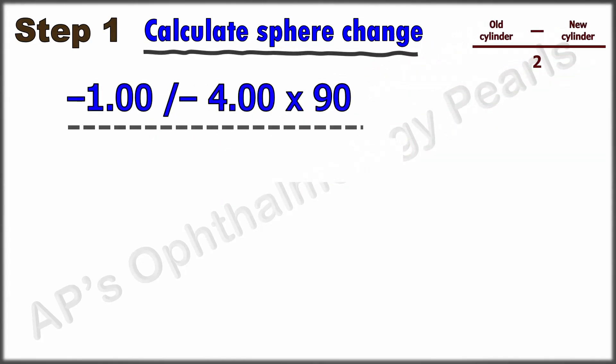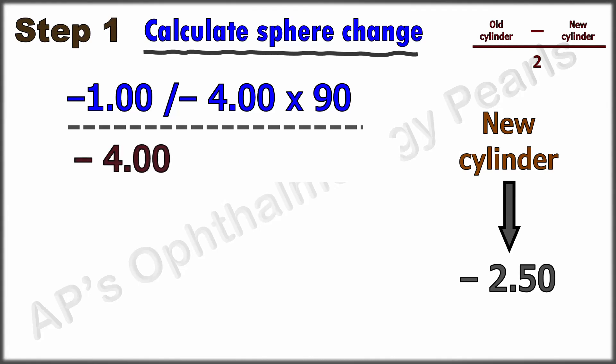Let us do this with an example. Let us say that even though this is the correct refraction for the patient, the patient accepts only minus 2.5 diopter cylinder. Substituting the respective values in the equation, we get old cylinder, that is minus 4, minus new cylinder, that is minus 2.5, divided by 2.